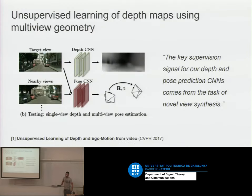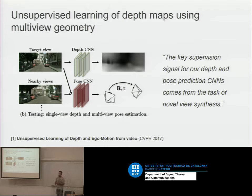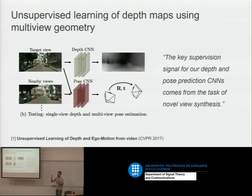We're going to talk about this paper because the supervised setup is more or less straightforward. What they do is learn to predict depth from videos in an unsupervised way — they don't have any ground truth. The idea is that they get a target frame for which they want to predict depth, and then they make use of the neighbor frames to create a supervision signal — an error — and with that they backpropagate and try to minimize it.